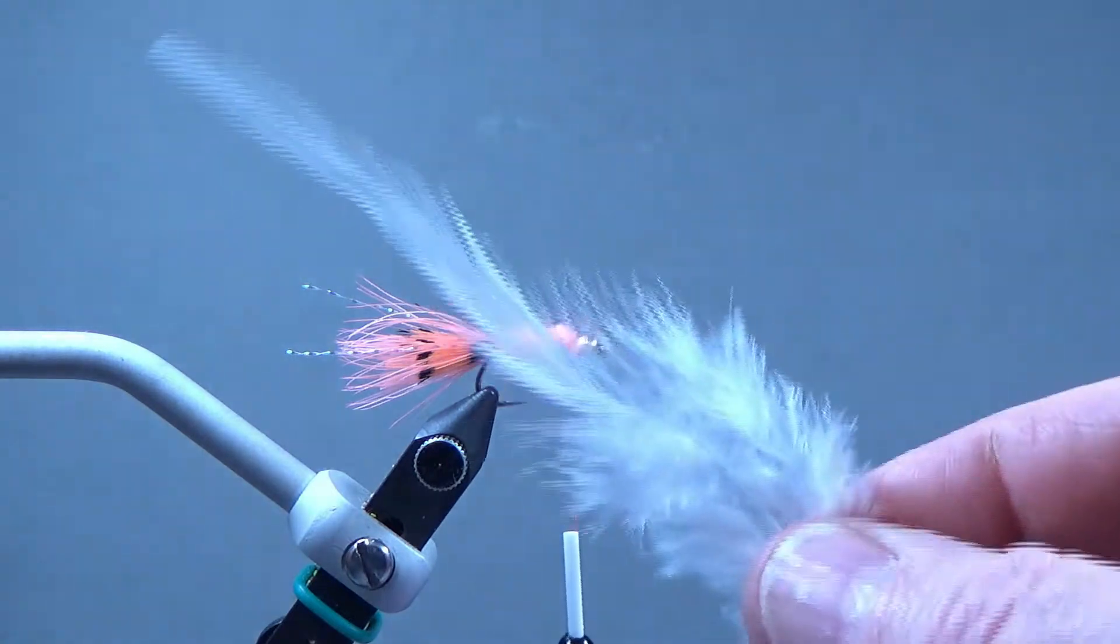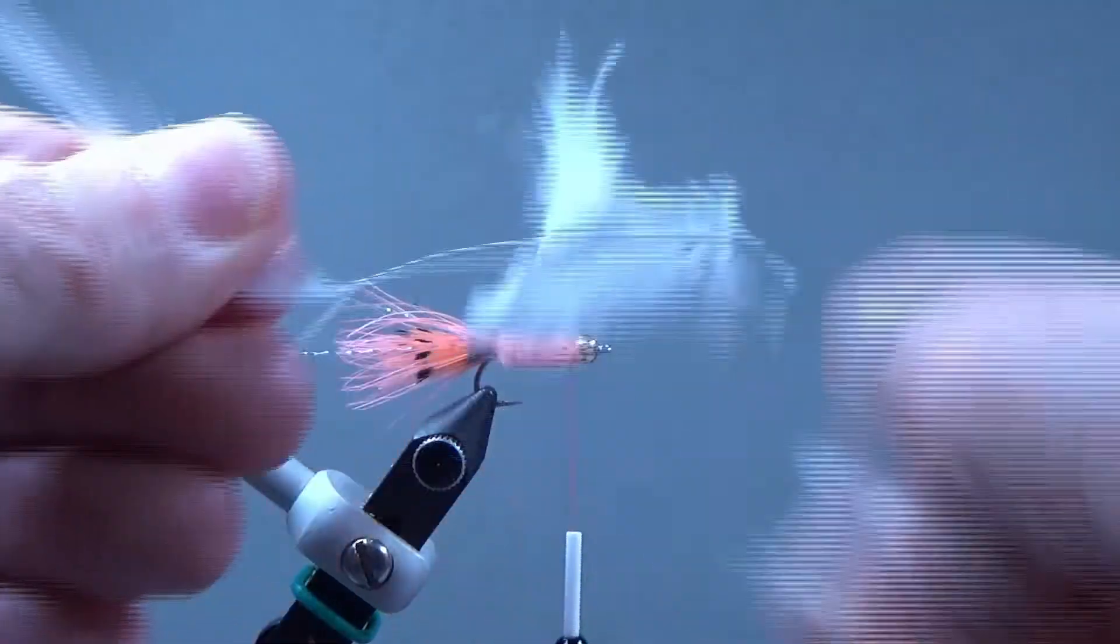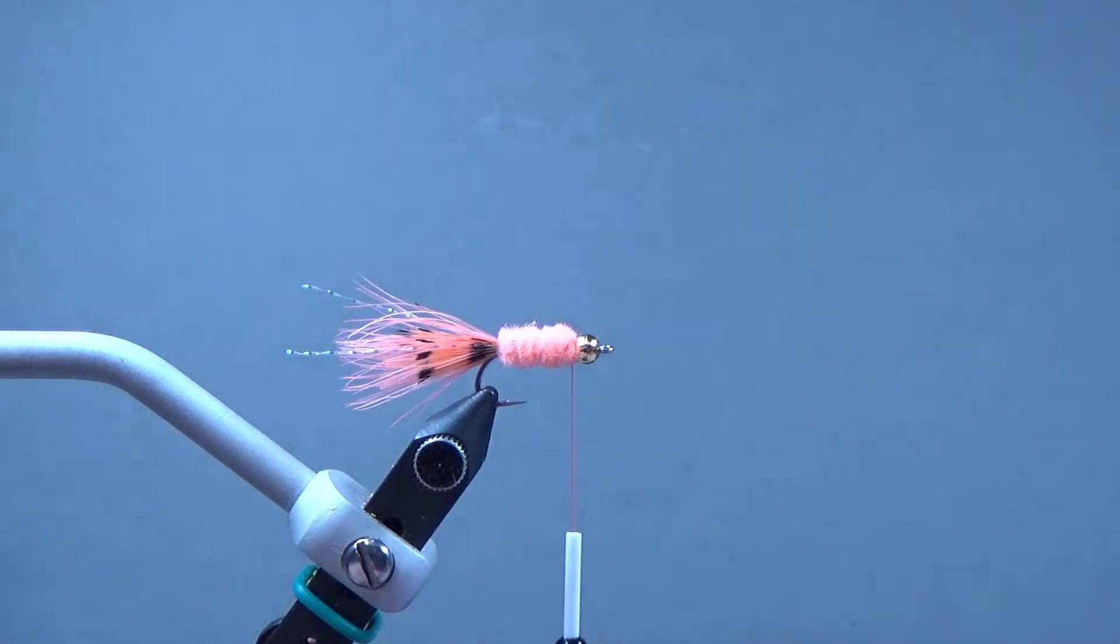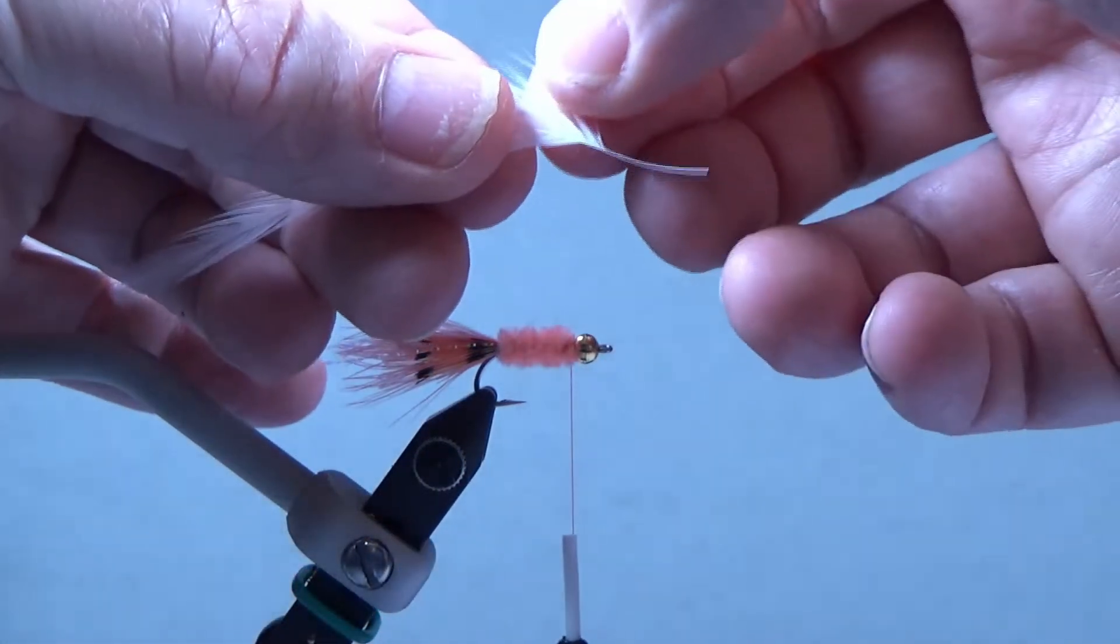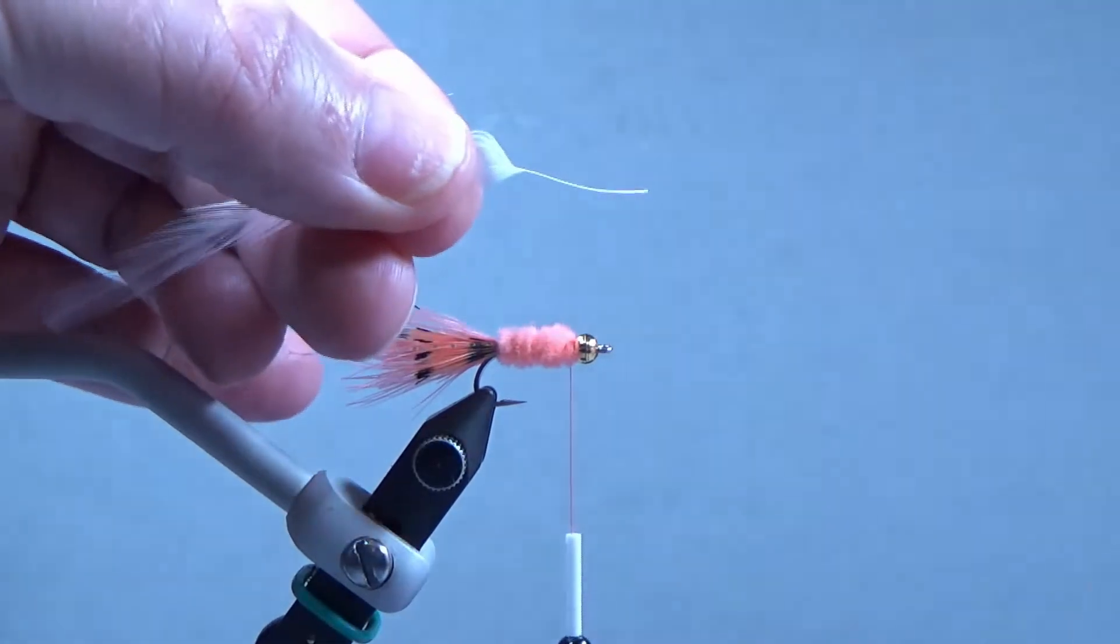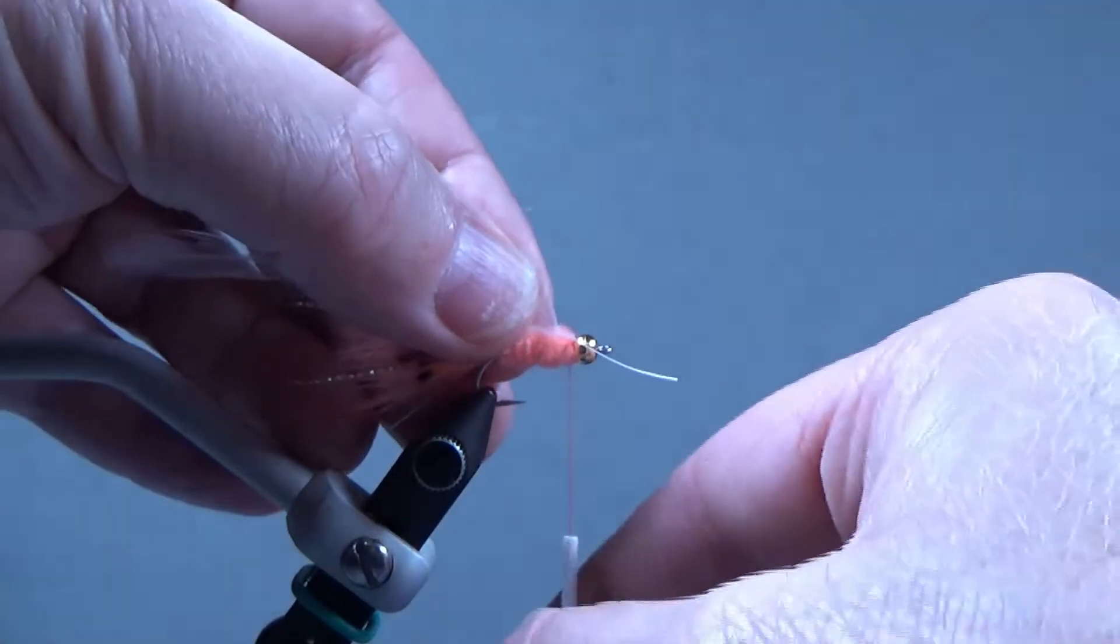So we'll take this white saddle hackle and we'll clean off this fuzzy stuff at the bottom and I'll clip it off and a couple more off there. We'll tie this in here by the stem.